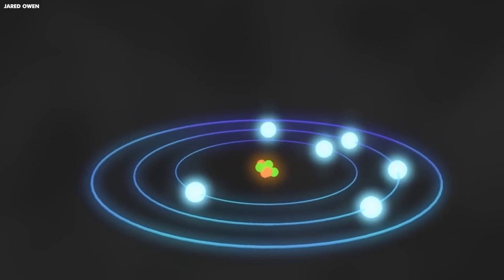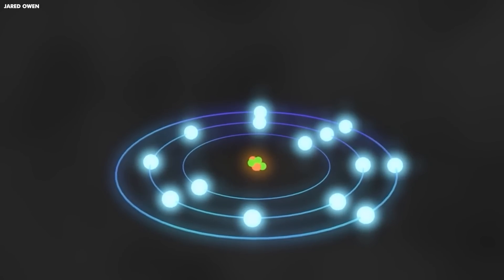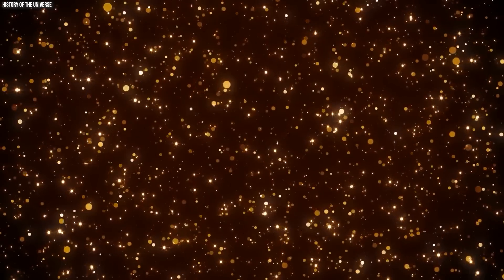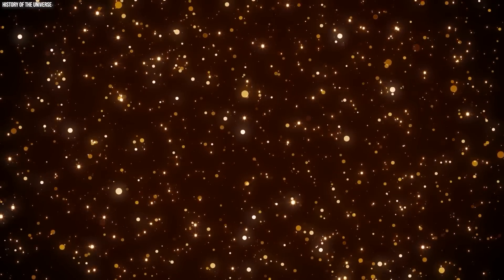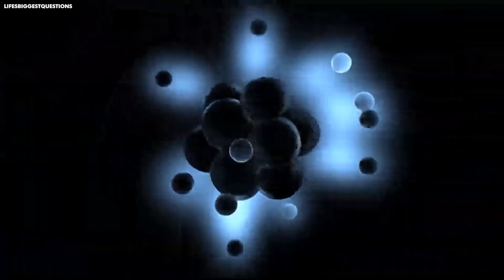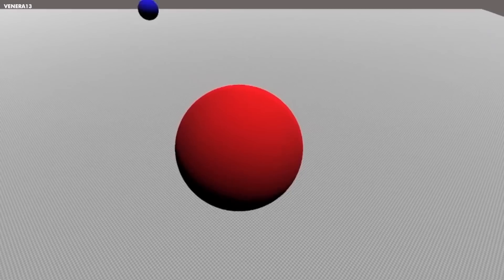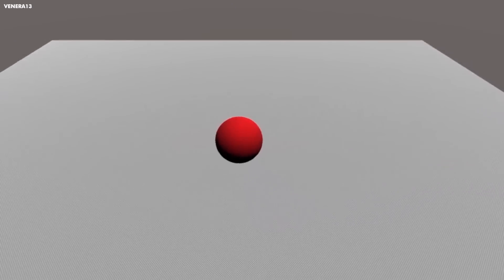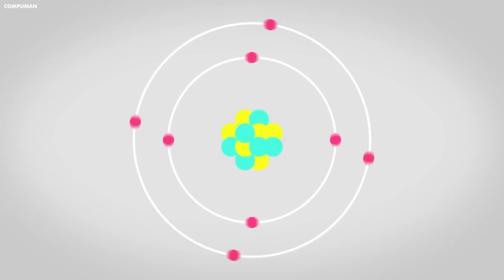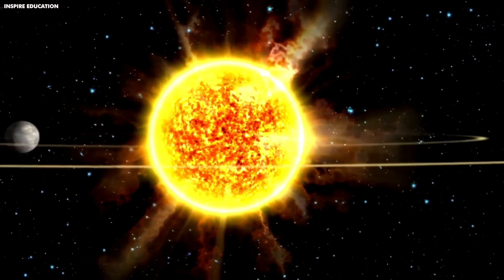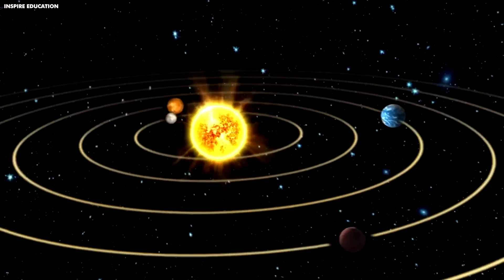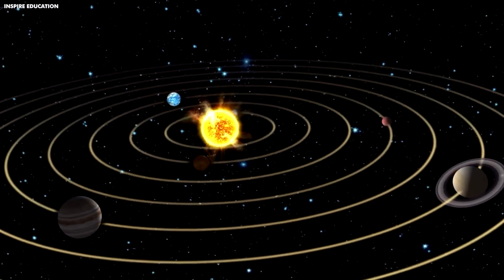Now, one of the easiest similarities to spot is between the atom and the solar system. Every atom, according to the Bohr or solar system model of matter, is made up of a nucleus and a number of electrons that orbit around the nucleus. The nucleus is significantly larger than the electrons. This is similar to a solar system, which has a large sun in the center and planets rotating in orbits around it.